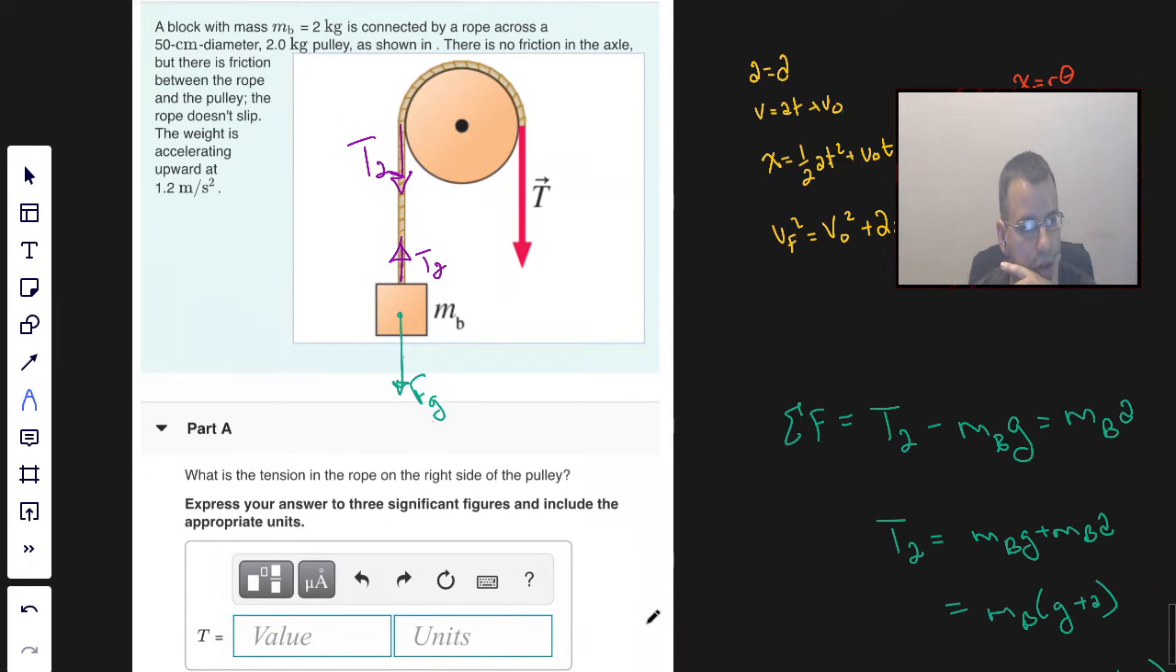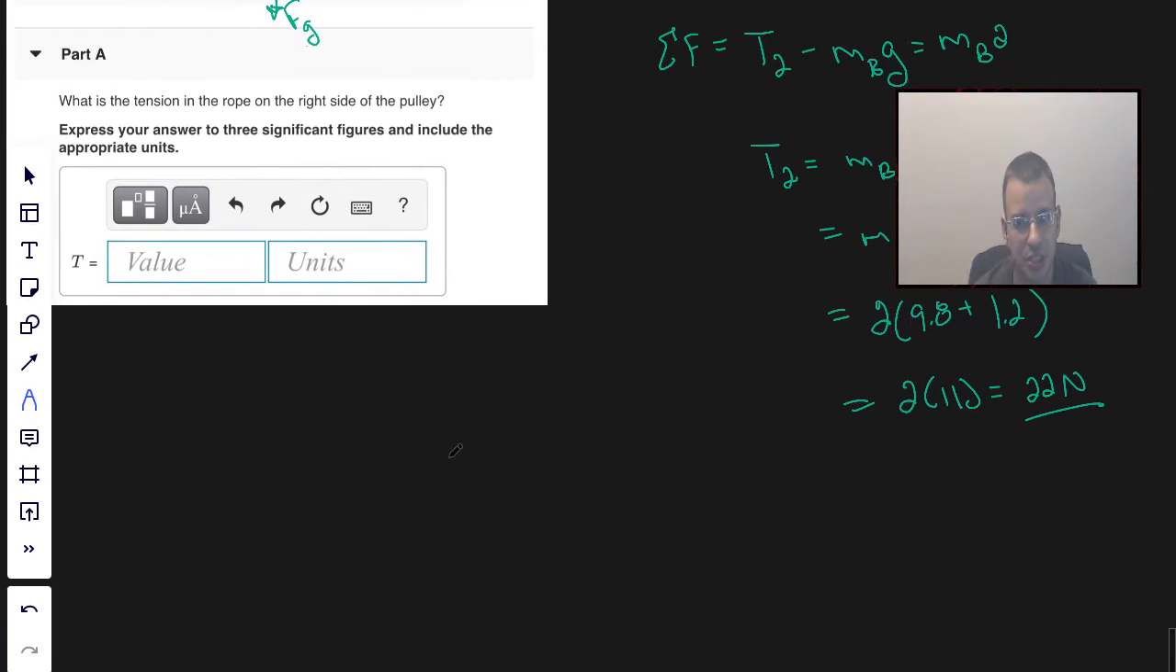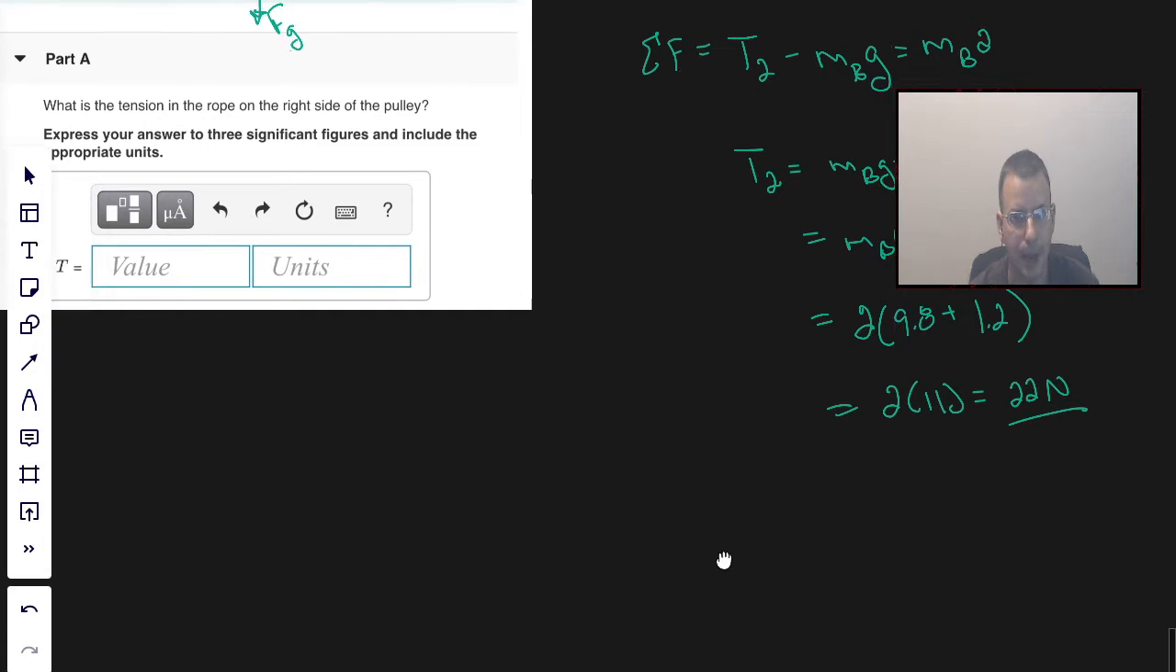So now we can look at the pulley up here. We already did a free body diagram for this with tension 2 and tension over here, and R is just going to be like that. And so we can say, just like we said the sum of all forces equals mass times acceleration, we're going to say the sum of all torques equals moment of inertia times angular acceleration. So the sum of all torques is going to be torque minus torque 2, and that's going to equal moment of inertia times alpha.